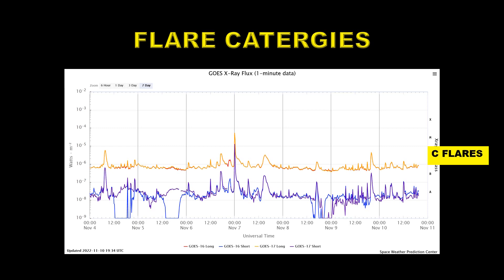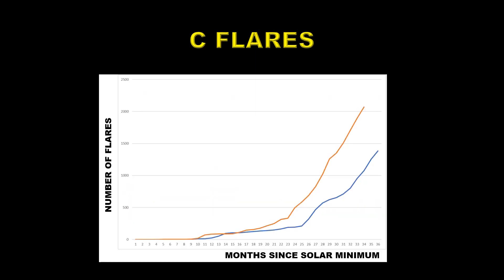Flares are characterized by the amount of X-ray flux they produce. C flares produce a flux between 10⁻⁶ and 10⁻⁵ watts per meter squared. M flares are 10 times larger, and X flares are 10 times larger than that. We've had X flares as large as X47, so that flare is 4,700 times brighter than a single C flare. Looking at the data, we have a large number of C flares, with one M5 flare at the beginning of November 7th — just a few days ago. Comparing C flares between Solar Cycle 25 and 24, the orange curve for Cycle 25 shows a vast increase over Cycle 24.